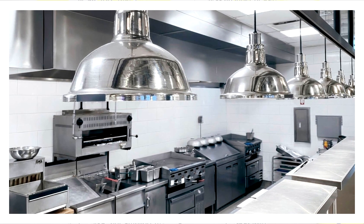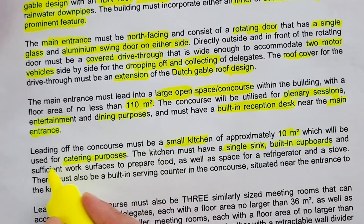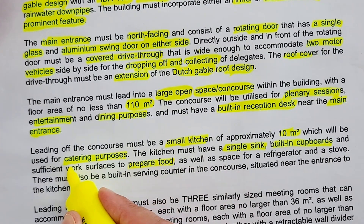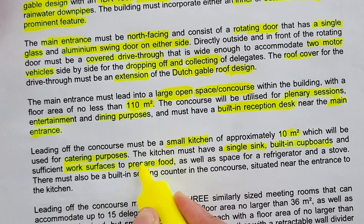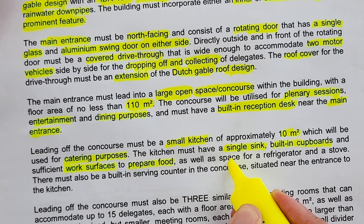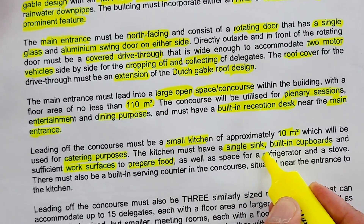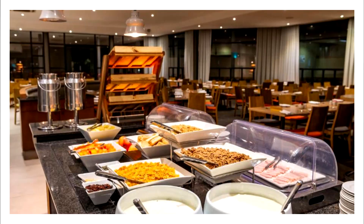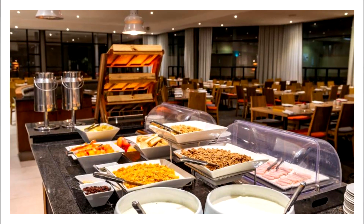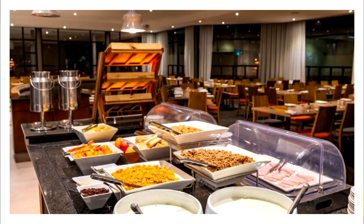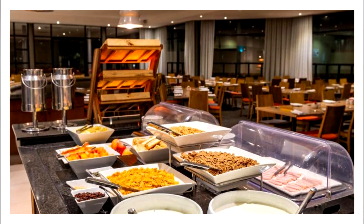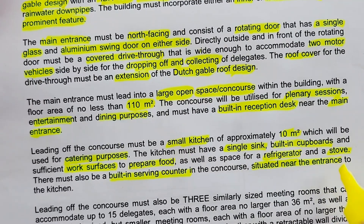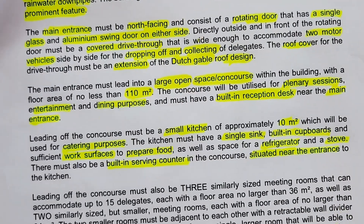Leading off the concourse must be a small kitchen of approximately 10 square meters for catering purposes. The kitchen must have a single sink, built-in cupboards, sufficient work surface to prepare food, as well as space for a refrigerator and a stove. There must also be built-in serving counters in the concourse situated near the entrance to the kitchen.